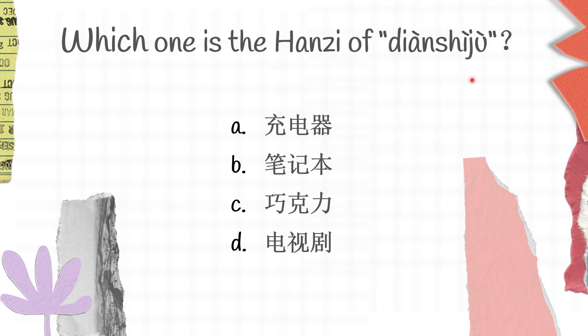Moving on to the next one: which one is the Hanzi of 'diànshìjù'? It's a little difficult here because we have three Chinese characters, but I think you guys can get the right answer. A is chōngdiànchí, B is bǐzìbǎn, C is qiǎokèlì, and D is diànshìjù. Diànshìjù here is D.